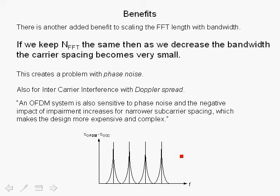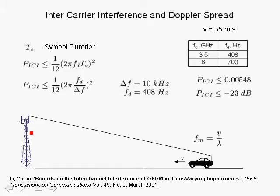There's also a problem with decreasing carrier spacing because of Doppler shift. Here we show a base station with a vehicle moving toward it. The maximum Doppler shift Fm equals the velocity of the vehicle divided by the wavelength, where the wavelength equals the speed of light divided by the carrier frequency. As we increase the carrier frequency, we decrease the wavelength and increase the maximum Doppler shift.